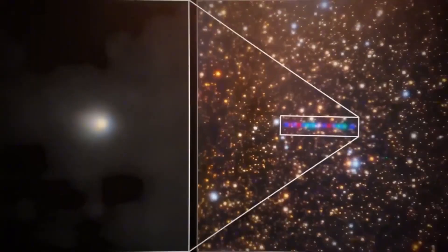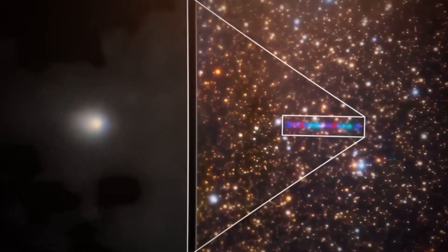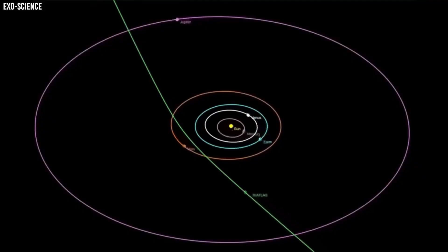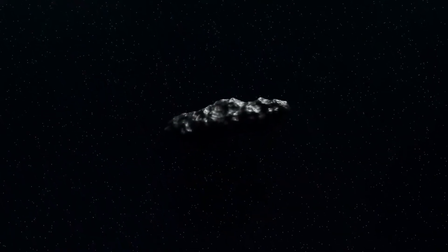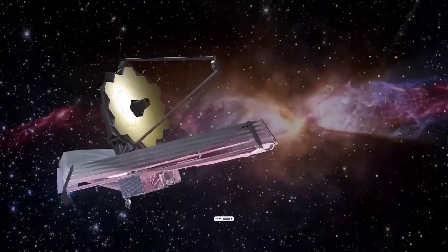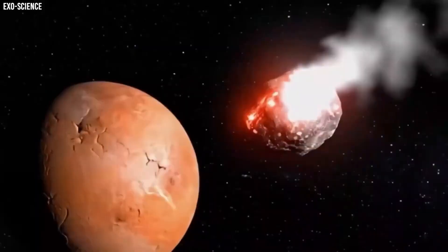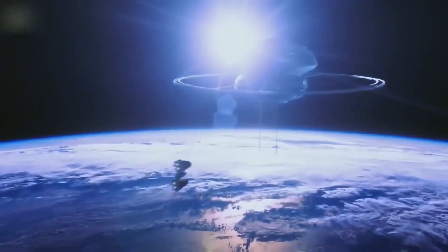Yet what they're seeing stubbornly refuses to match the neat templates used for comets and asteroids. Atlas is accelerating in a way gravity alone can't explain, and the mismatch has been growing for months. Harvard astrophysicist Avi Loeb was among the first to publicly highlight the anomaly, reporting that his team detected non-gravitational acceleration, a slight but measurable push acting on 3i/Atlas without a clear natural source.